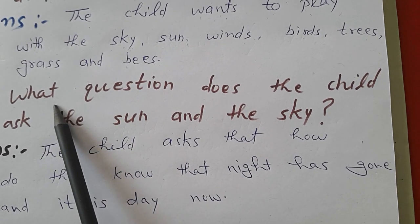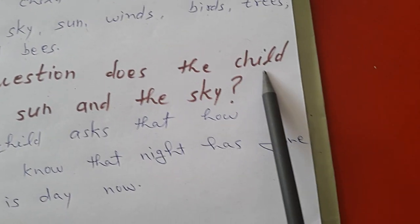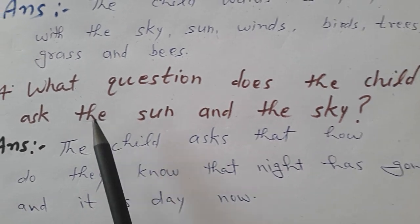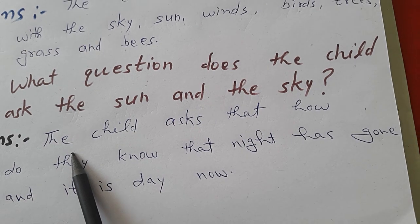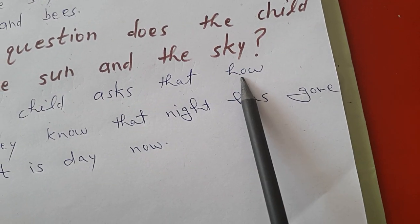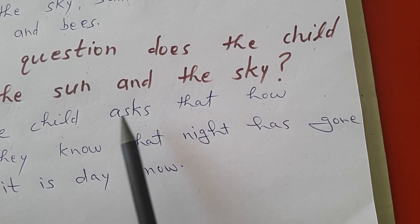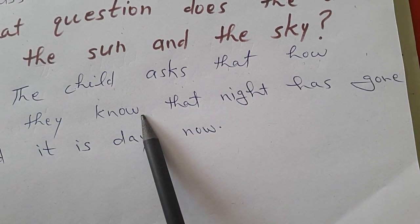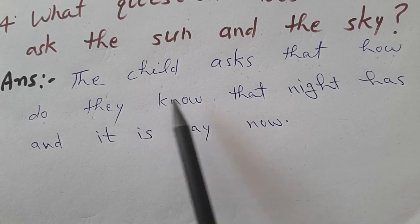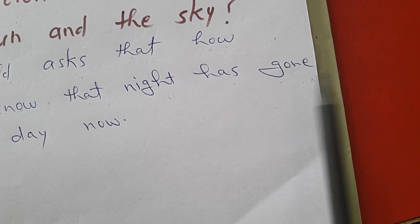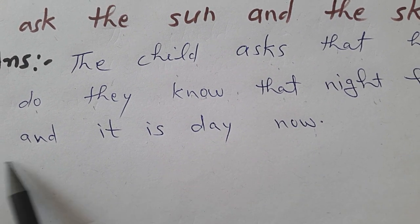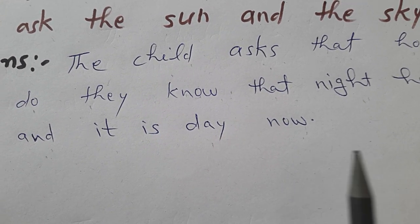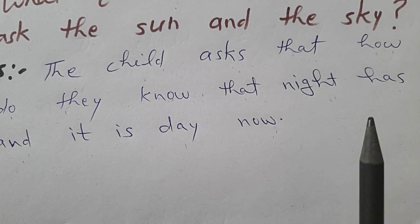Question number four and last: What question does the child ask the sun and the sky? The child asks how do they know that night has gone — rat chali gayi hai — and it is day now — ab din ho gaya hai. Yeh baat sky ko aur sun ko kaise pata chali, bacha puchta hai.